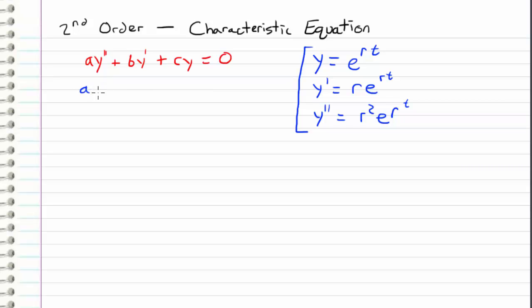So we get a times r squared e to the rt, plus b times r e to the rt, and then plus c times e to the rt. And again this is equal to zero because it's homogeneous.